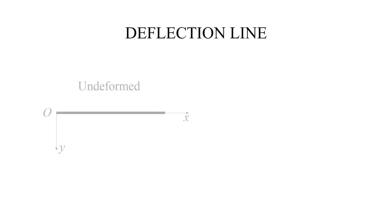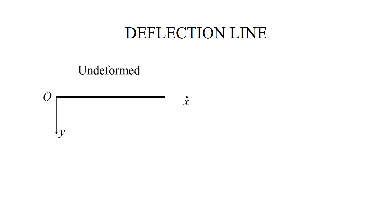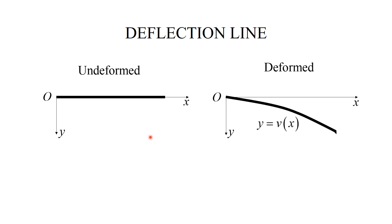Let us begin by considering the undeformed beam. The x-axis is along the beam, the y-axis points downward. It is useful to compare this with the deformed configuration, where the deformed line y equal to v of x is shown here. We call this line the deflection line, and we refer to v of x, or vertical downward displacements, as deflections.